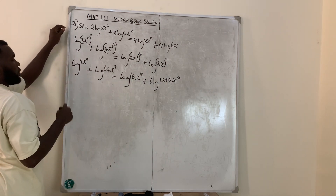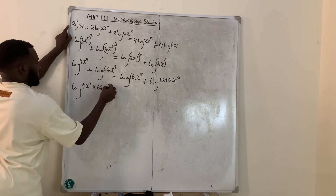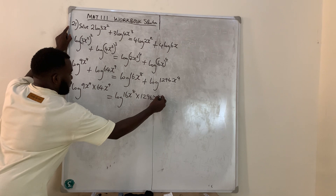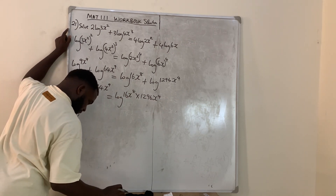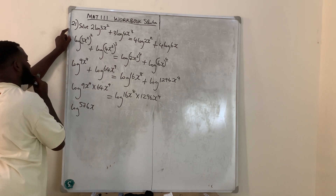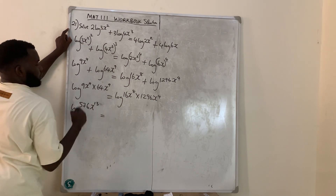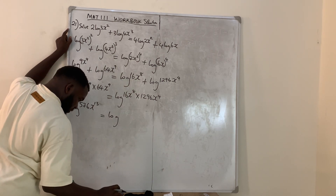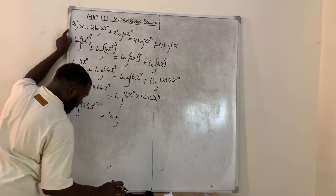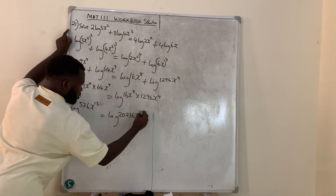According to the law of logarithms, we combine: log (9x⁴ × 64x⁹) equals log (16x⁸ × 1296x⁴). So we get log 576 x raised to power 13 equals log 20736 x raised to power 12. The powers add: 4 plus 9 is 13 on the left, and 8 plus 4 is 12 on the right.